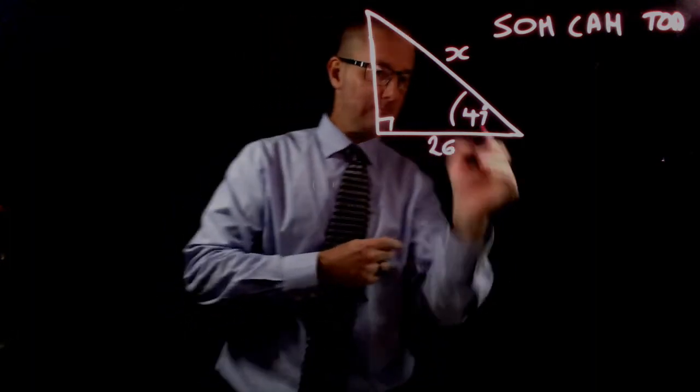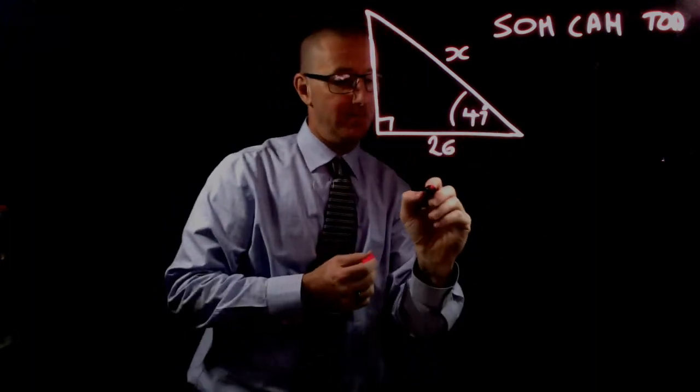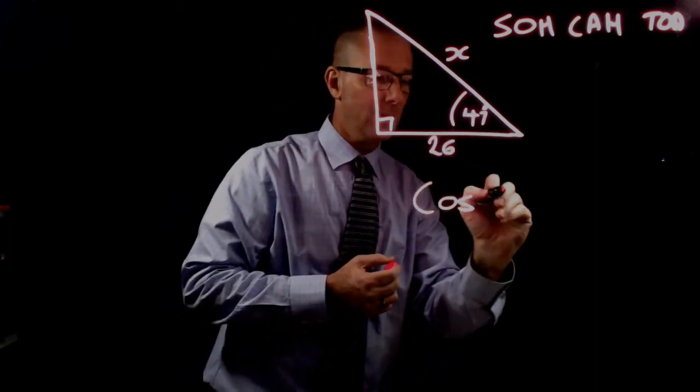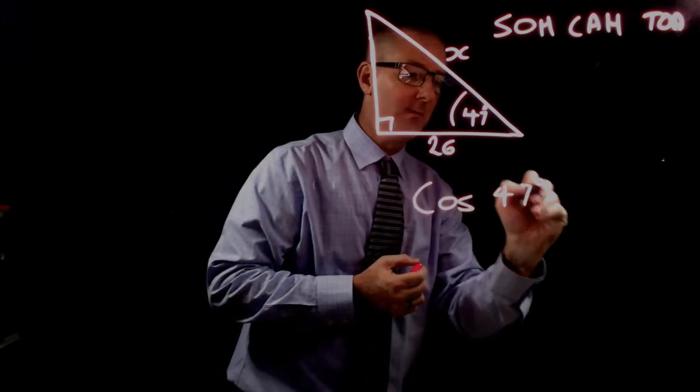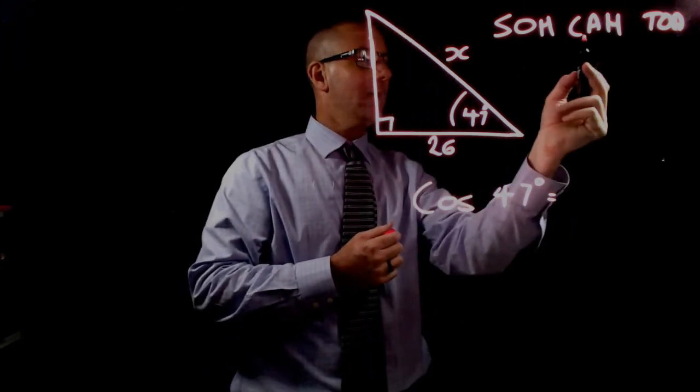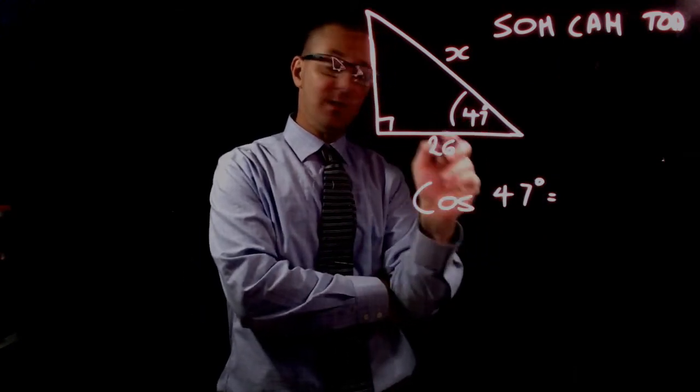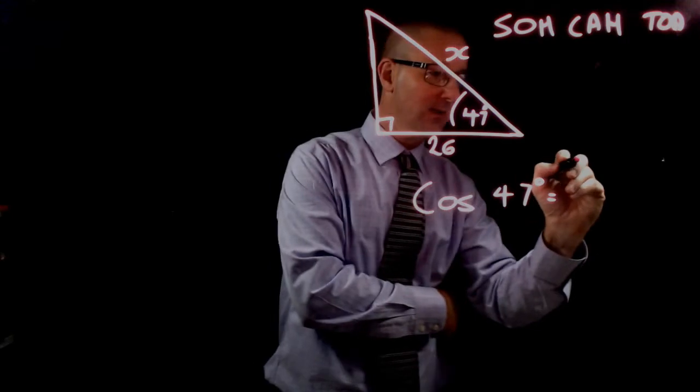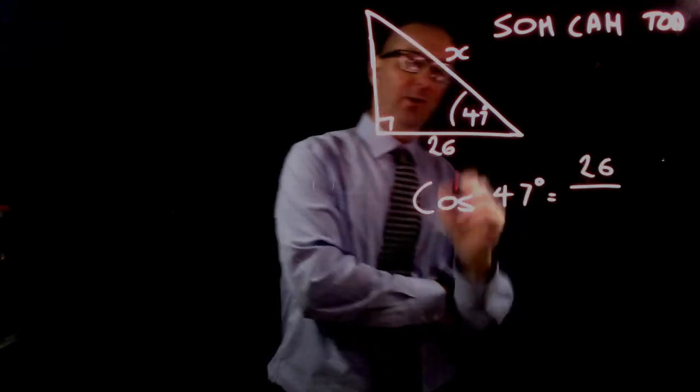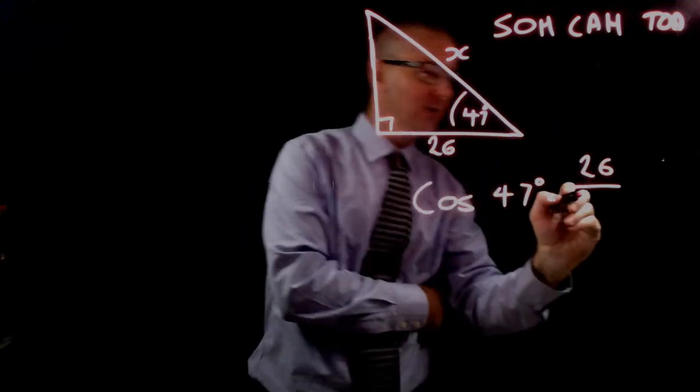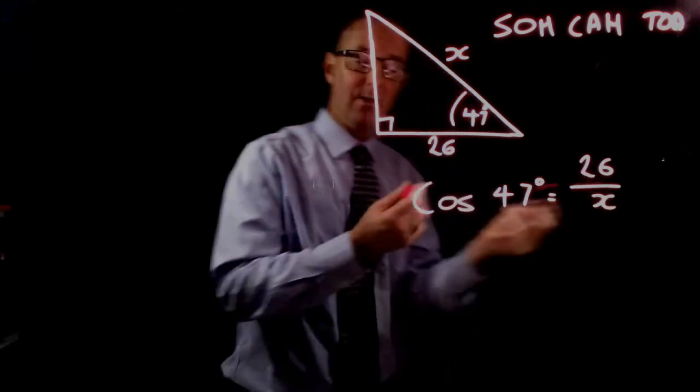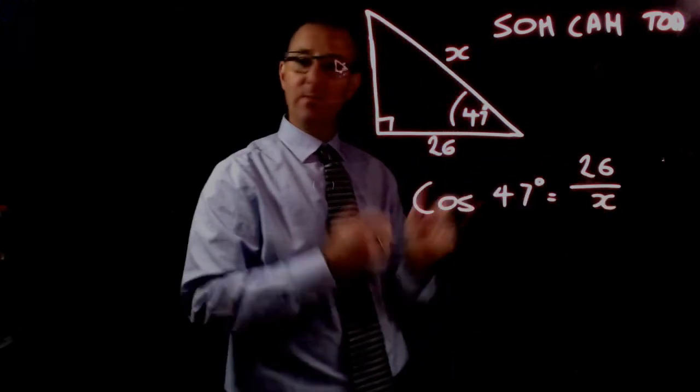We write our equation: cosine of 47 degrees equals the adjacent over the hypotenuse. That's 26 over x, our unknown value. Now we need to solve this for x, solving for a denominator.